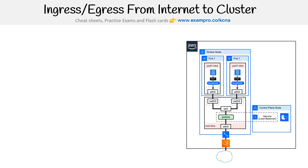Let's take a look at ingress and egress from an internet cluster. We are reaching the pinnacle of very complex diagrams. Notice that the representation of service is slightly different here — service has a dotted line that goes around IP tables. I'm not sure if the service lives in the control plane or the worker node; I didn't double check. But the reason I put it over here is because it has to talk to the cloud controller manager. That made a little bit more sense, though service is represented slightly differently from the prior diagram.